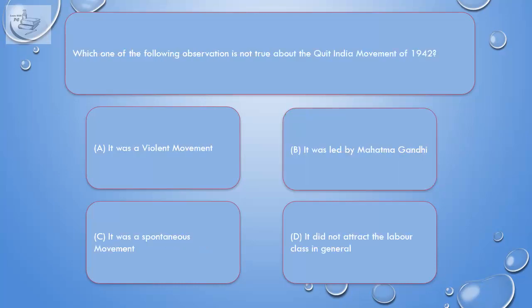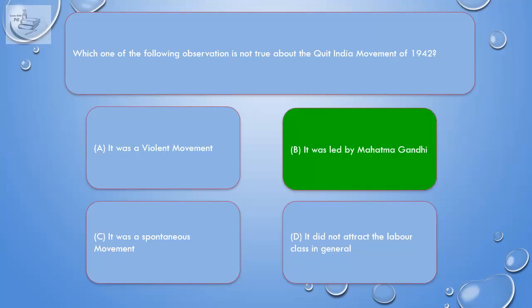Question: Which one of the following observations is not true about the Quit India Movement of 1942? A. It was a violent movement, B. It was led by Mahatma Gandhi, C. It was a spontaneous movement, D. It did not attract the labor class in general. Correct answer is B: It was led by Mahatma Gandhi.